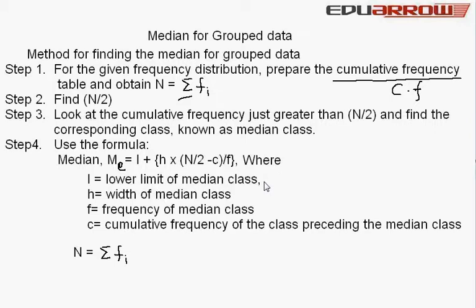h = width of the median class, f = frequency of the median class, and c refers to the cumulative frequency of the class preceding the median class. So N = Σfi.